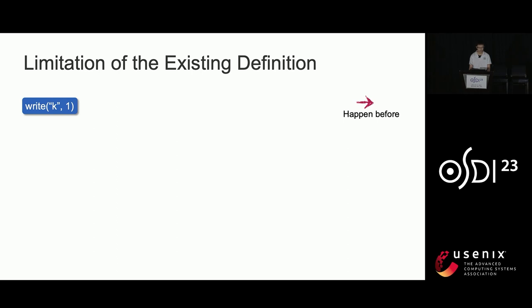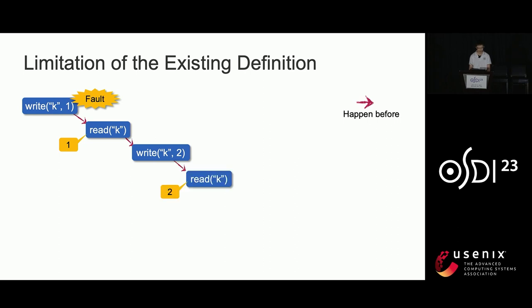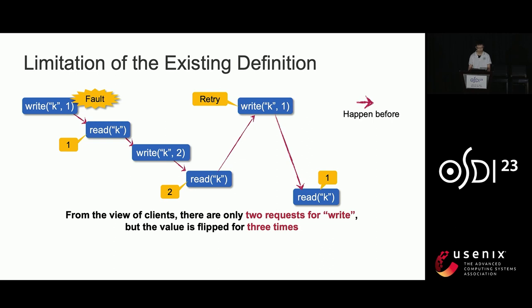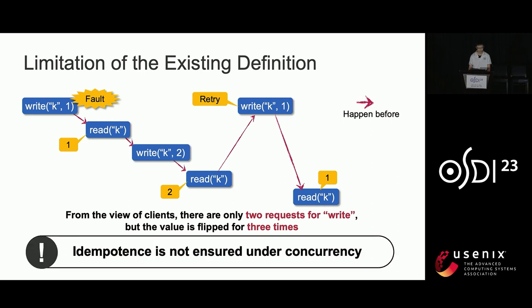Assume the client first invokes write(key,1) and the value becomes 1, but then the function fails. Then the client runs read(key) and it returns 1. Then the client uses write(key,2) to change the value to 2, so read(key) returns 2. At this point, the platform retries the failed write(key,1), making the value 1 again. The client runs read(key) and it returns 1. From the client's view, without retry and failure the value should have changed only twice, but clients have observed the value changed three times, which is impossible without retry and failure. So these two functions are not idempotent under the concurrency scenario.